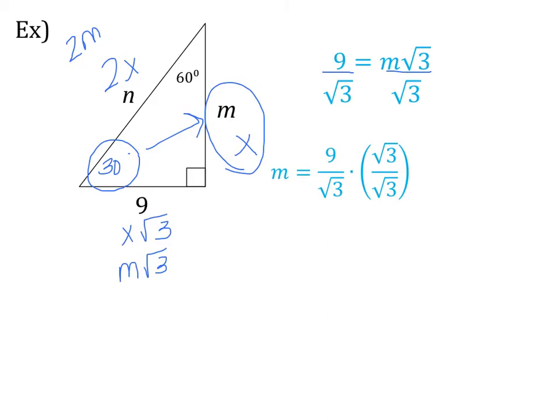On top I'll have 9 times √3 — they can't mix because one is inside the radical and one is outside. On the bottom, √3 times √3 is √9, and √9 is 3. Since 9 and 3 are both outside the radical, we can simplify: 9 over 3 is 3. So the final answer for m is 3√3.